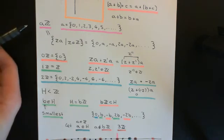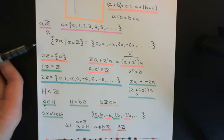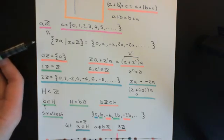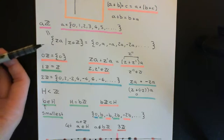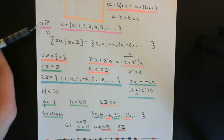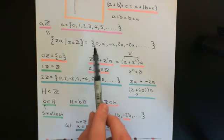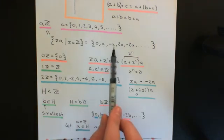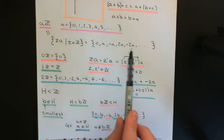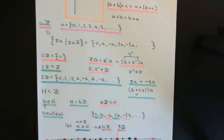What does aℤ actually mean? Well, it refers to the set containing all integer multiples of this non-negative integer a. So it will consist of 0, a, negative a, 2a, negative 2a, 3a, negative 3a, etc.